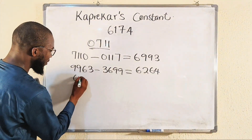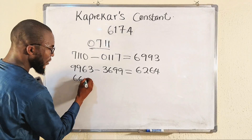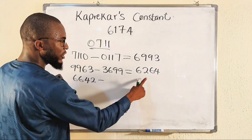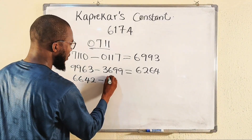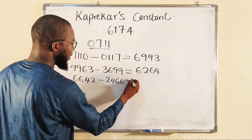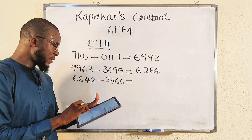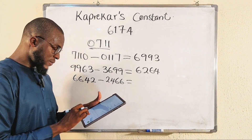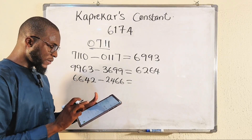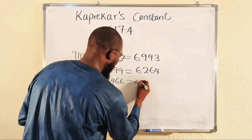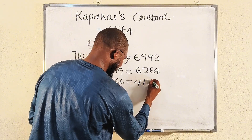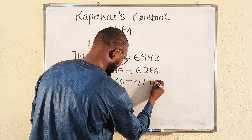So for the third iteration, the biggest number would be 6642, minus the smallest one, which is 2466. The difference of 6642 minus 2466 gives us four thousand one hundred and seventy-six.